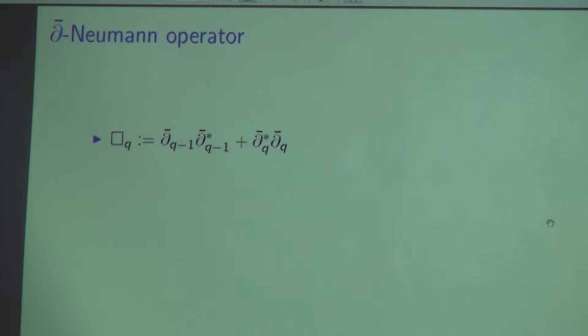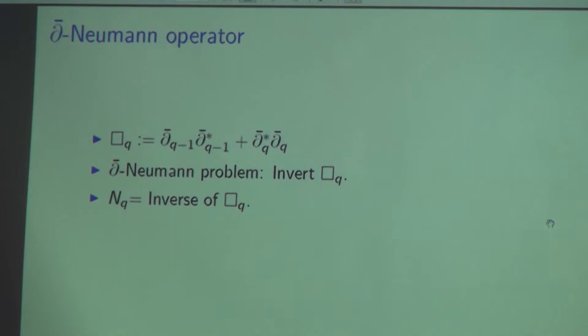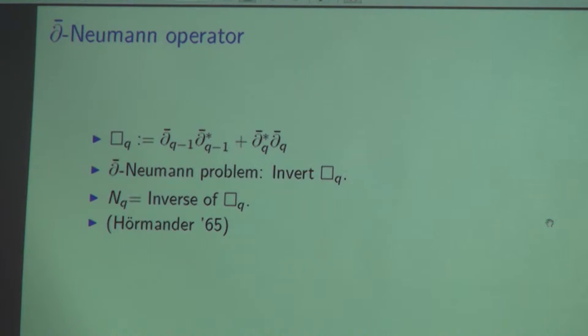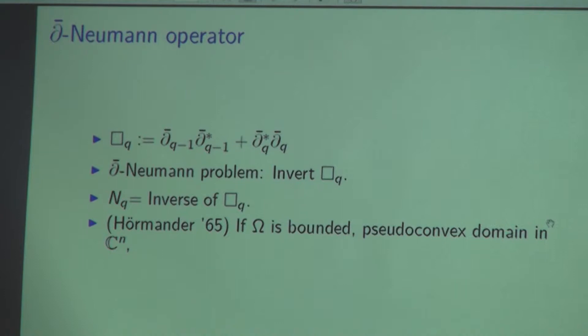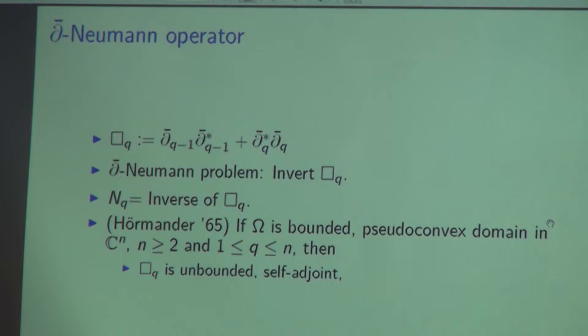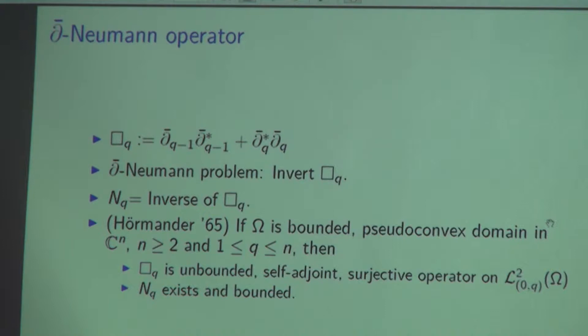The D-bar Neumann problem is the inversion of box_Q whenever it is invertible. The D-bar Neumann operator N_Q is, if the inverse exists, the inverse of box_Q. The classical result is that Hörmander in 1965, after Kohn, proved that this D-bar Neumann operator exists on general bounded pseudoconvex domains in C^N. He proved that box_Q is an unbounded self-adjoint surjective operator on L^2, and that N_Q exists and is bounded there.